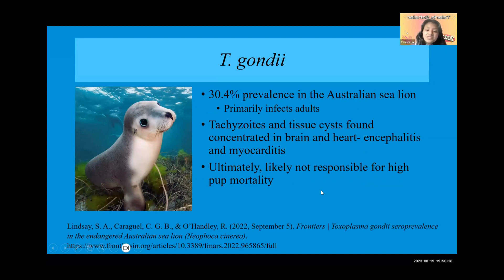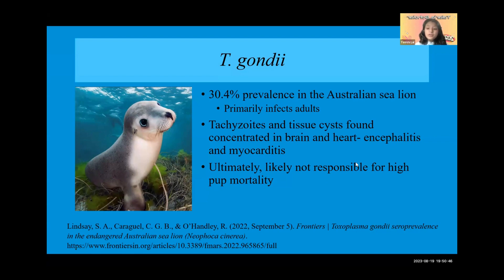Tachyzoites and tissue cysts are found concentrated in the brain and heart, causing encephalitis — swelling of the brain — and myocarditis. As a result, it is unlikely that anemia is being caused by toxoplasmosis. Thus, toxoplasmosis is ultimately not responsible for the anemia and pup mortality. However, it could be a potential threat to the Australian sea lion, because since the species is already so weak, if this infection spreads within the population, it could have devastating results.